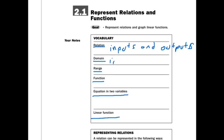A domain would be all the inputs, like generally what we call the X number. And the range would be all the outputs.